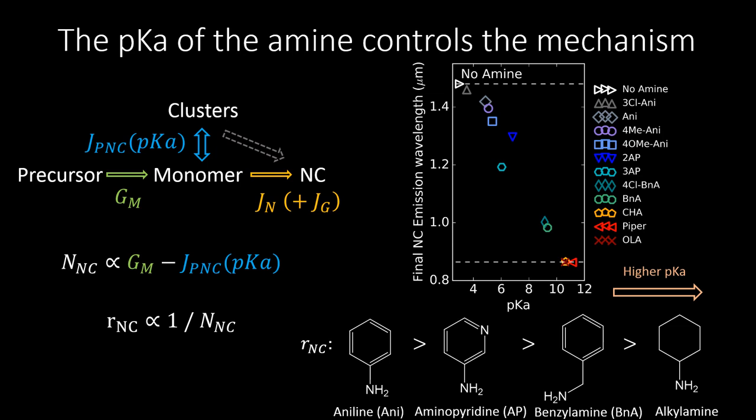Returning to the previous framework, we explained our results through a pKa-dependent Jpnc. Being strong when no amines are present, and absent with high pKa amines, this can be extended to the number of nucleated particles being proportional to Gm, but counterbalanced by the rate of pre-nucleation cluster formation. Thus, for the same monomer generation rate Gm, if no amines are used, Jpnc is large and a reduced effective monomer generation rate is observed, yielding a small number of nucleated particles at completion. On the other hand, if high pKa amines are used, there is no competition for monomers and the full potential of Gm is observed, yielding a large number of nuclei and small particles at completion.